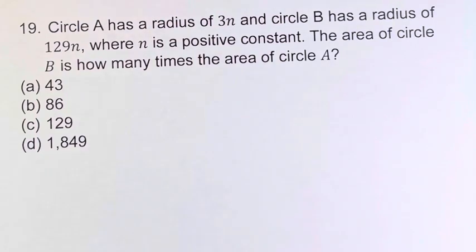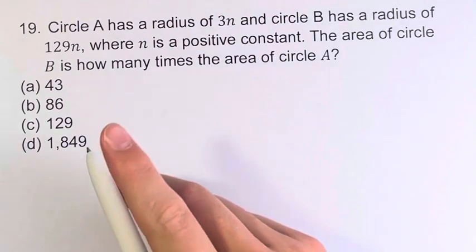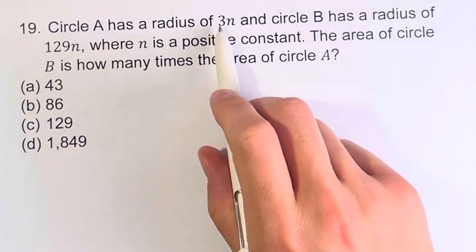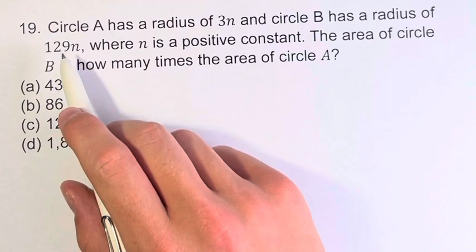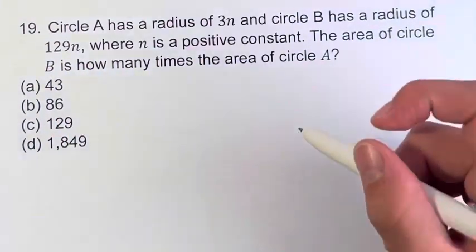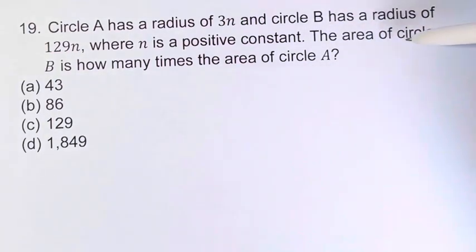Hello and welcome back to another video. In this problem, we're told that circle A has a radius of 3n and circle B has a radius of 129n, where n is a positive constant. We're asked, the area of circle B is how many times the area of circle A?